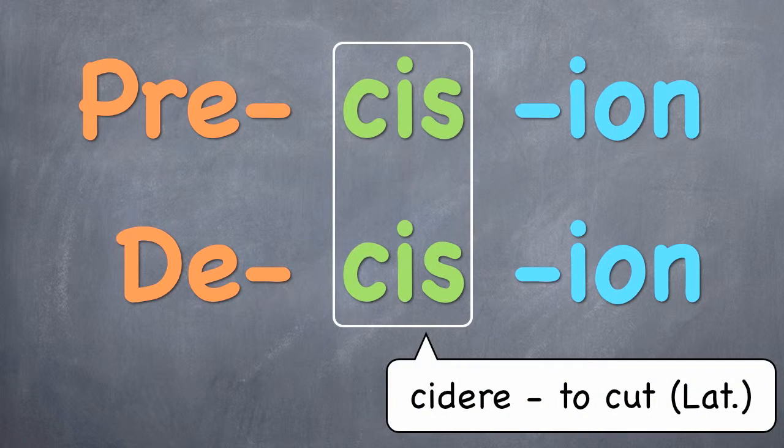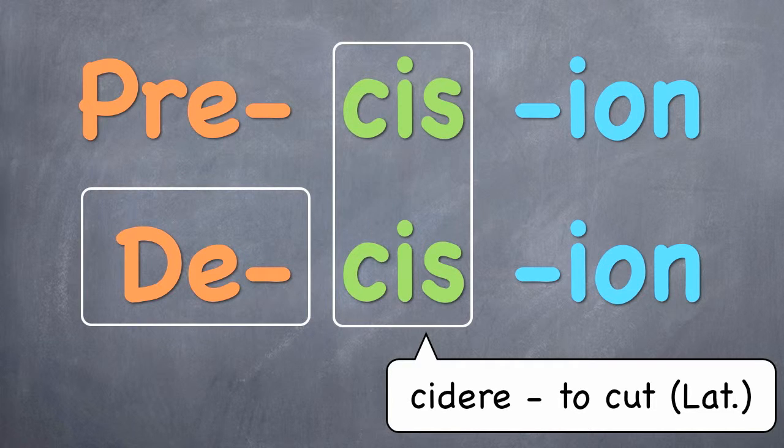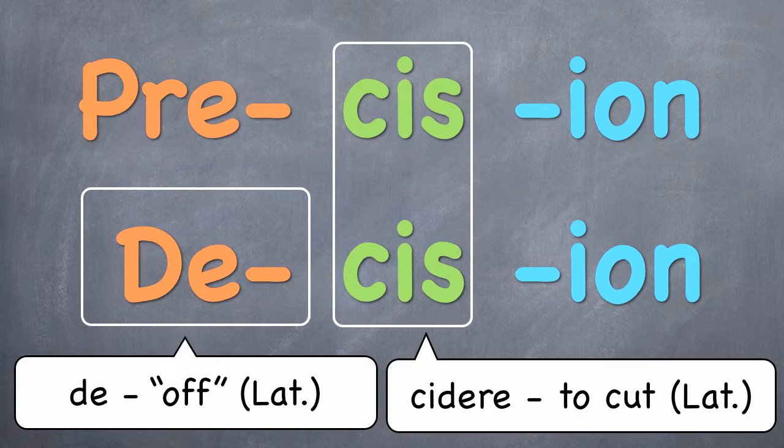Now, how does the word decision differ from the word precision? It has a different prefix, de. And de in Latin means down from or off. Like when something falls down from the table, which means it falls off the table.